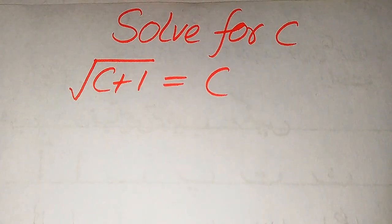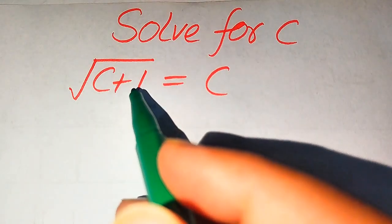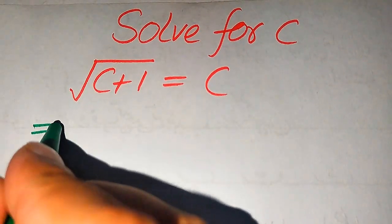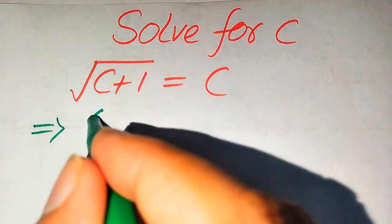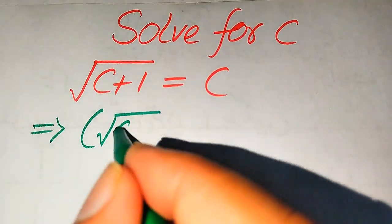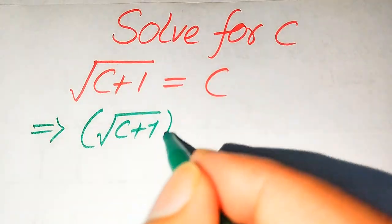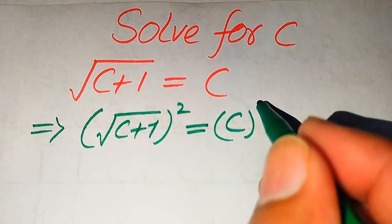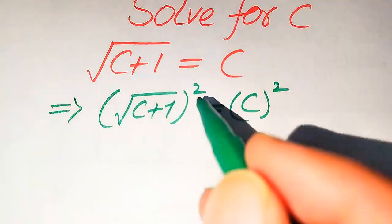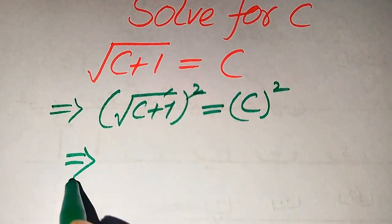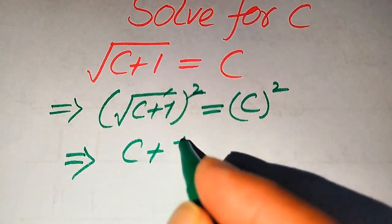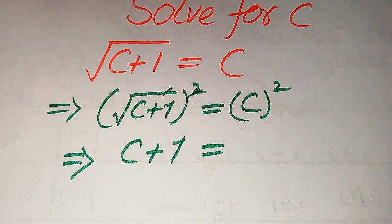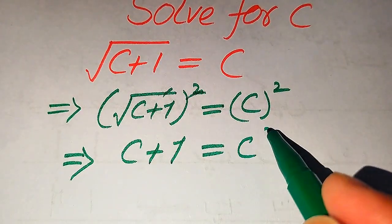First we need to remove the radical sign from the left hand side. In order to remove this sign, we need to take squaring on both sides. When we take squaring on both sides, this 2 and the square root are gone and we get c plus 1 equals c squared on the right hand side.